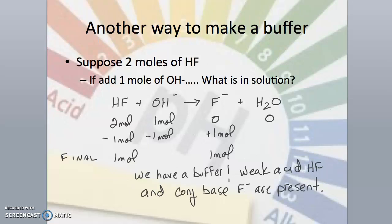In closing, I'll briefly talk about another method of creating a buffer. HF is a weak acid. If I add a strong base, I will produce the conjugate base of the weak acid. If there are sufficient amounts of both present, we will have a buffer system. We could also create a buffer by adding an amount of strong acid to a weak base.